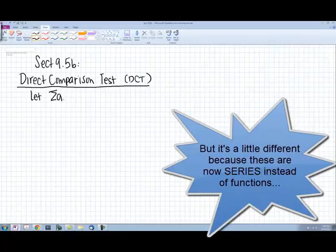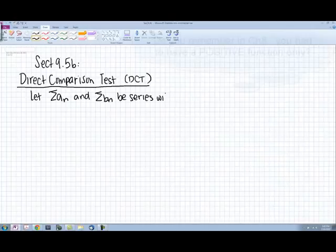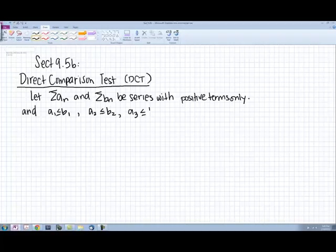We're going to have two series, a sub n and b sub n, both series with positive terms only. And of course we have a sub 1 is less than or equal to b sub 1, a sub 2 less than or equal to b sub 2, a sub 3 less than or equal to b sub 3, and so on. So then we have two conditions here.